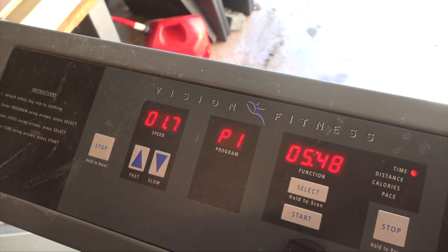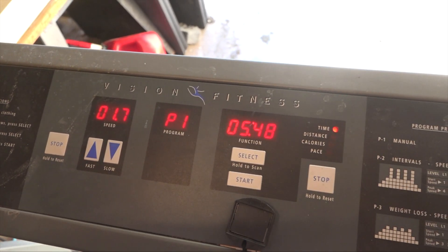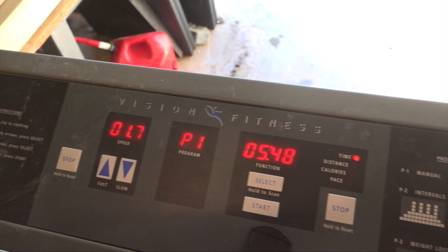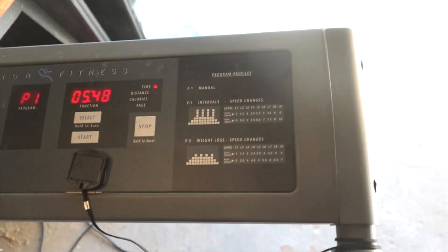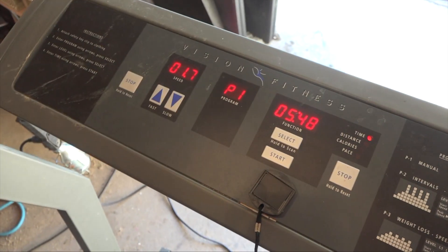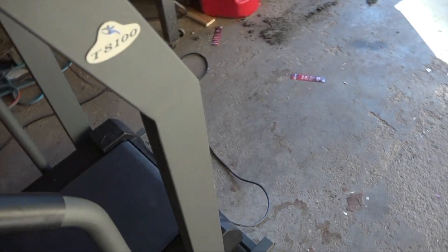This machine is a Vision Fitness - my apologies, pretty snazzy. They made these around 1998 to the early 2000s. The model number is the T8100. It's got some programmability features here and a button on the side that raises and lowers the incline.